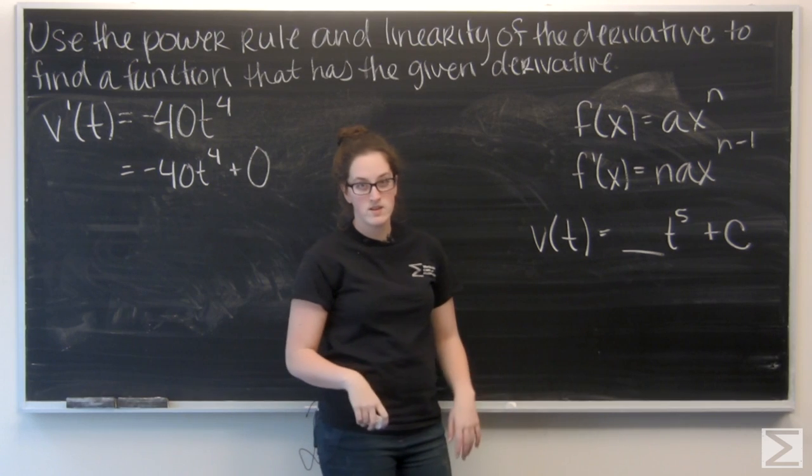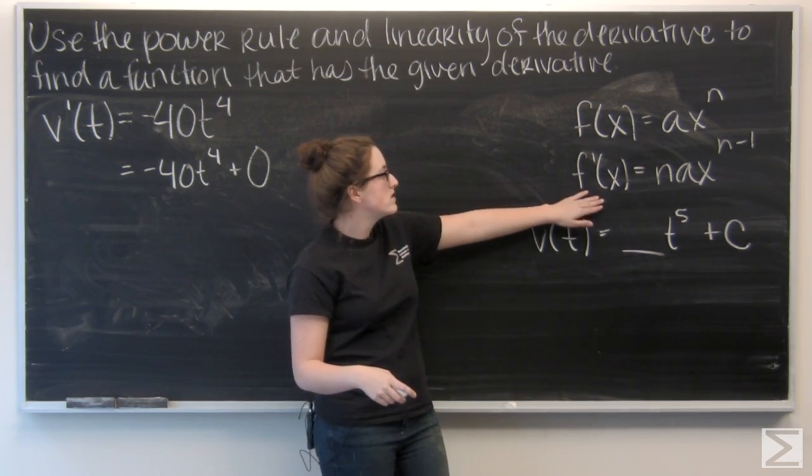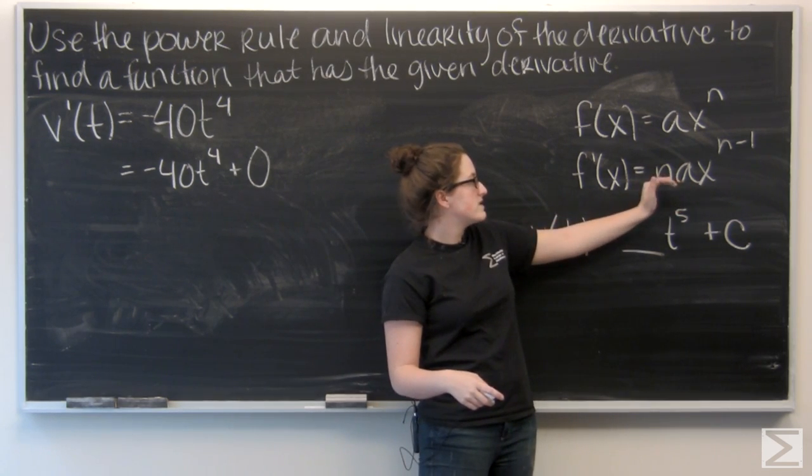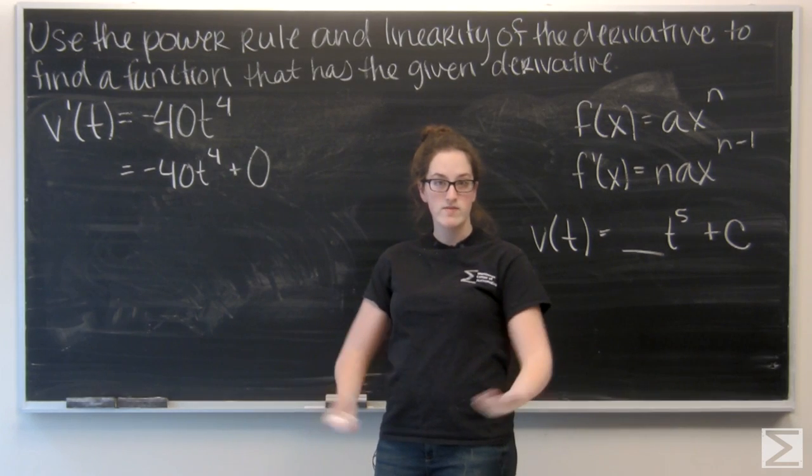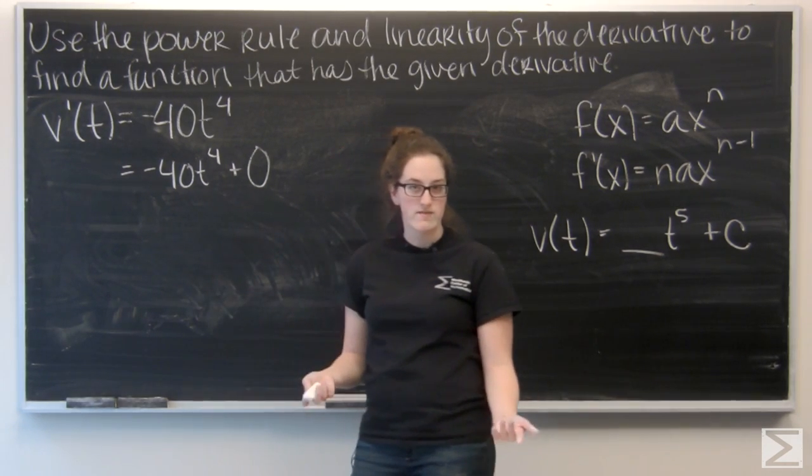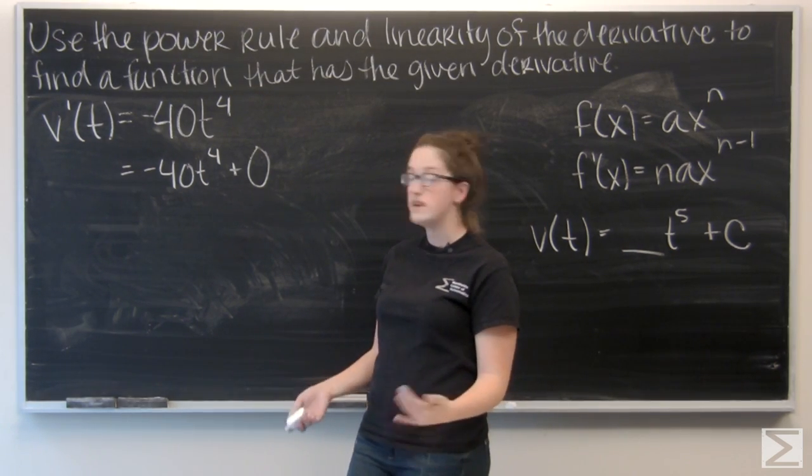Now let's work on finding our a. Well, I know that in the power rule, the coefficient for x is n times a. Well, I know what my n is. It's five. So I just need to rewrite this in a way that I can find my a. So let me go ahead and pull a 5 out of that negative 40 t to the fourth.